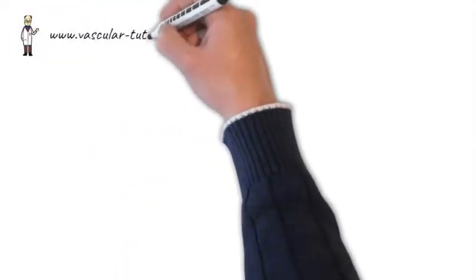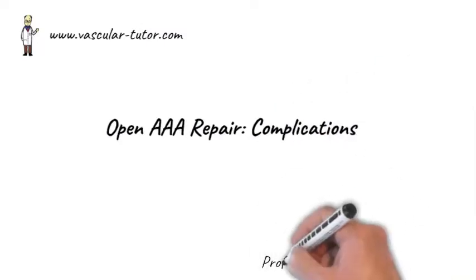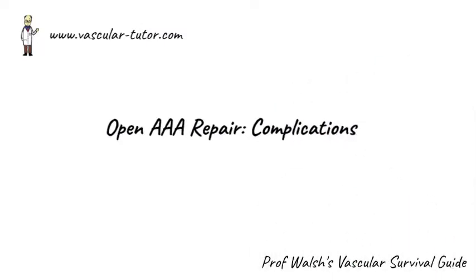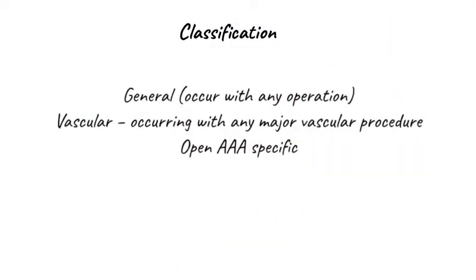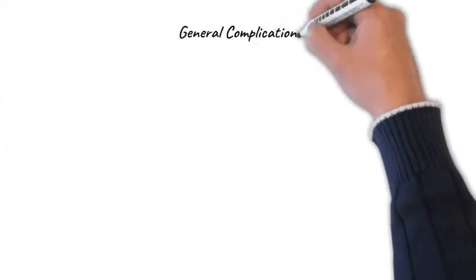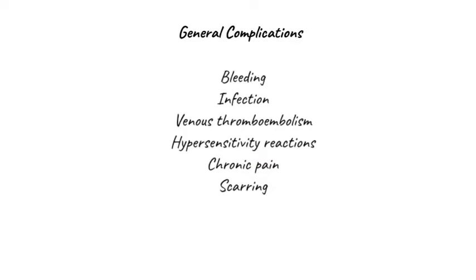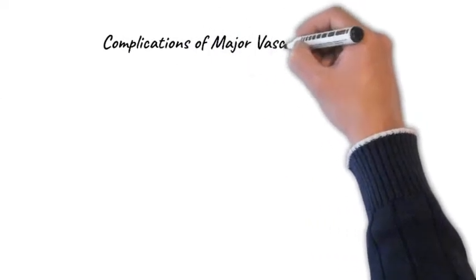Open AAA repair is becoming a more frequent operation again, so you need to know some of the common complications. We classify complications of open AAA repair into general complications, which can occur with any operation, vascular complications, which can occur with any major vascular procedure, and open AAA specific complications. General complications include bleeding, infections such as wound infection or urinary tract infection, venous thromboembolism, hypersensitivity reactions, chronic pain, and scarring.